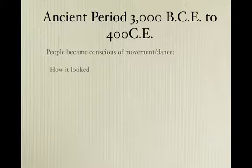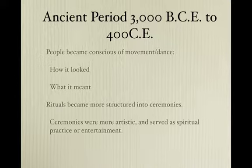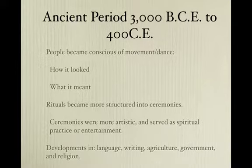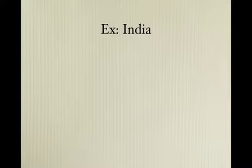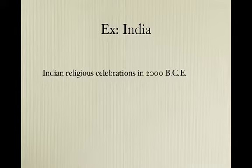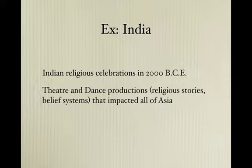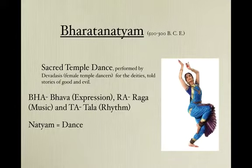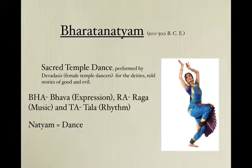People became more conscious of movement — how it looked and what it meant. Rituals became more structured into ceremonies, which were more artistic than primitive rituals, and served as spiritual practice or sometimes just entertainment. In India, beginning around 2,000 BCE, theater and dance productions told religious stories and reflected a belief system that impacted all of Asia. Bharatanatyam is a classical Indian dance originating before common era, a sacred temple dance performed by devadasis — female temple dancers.